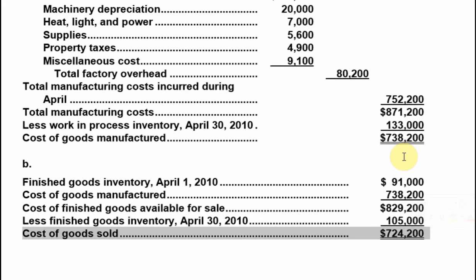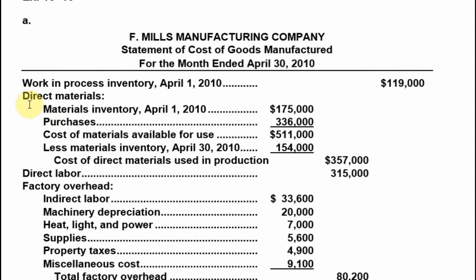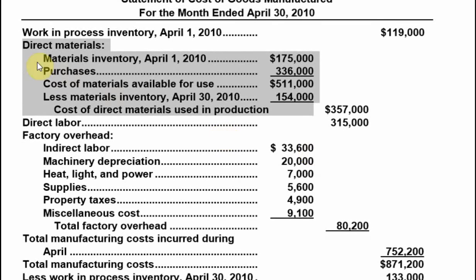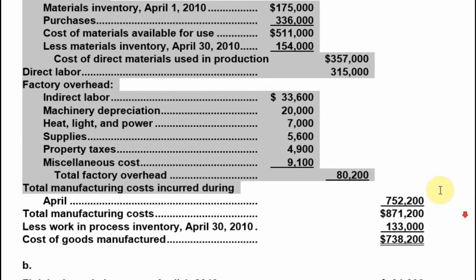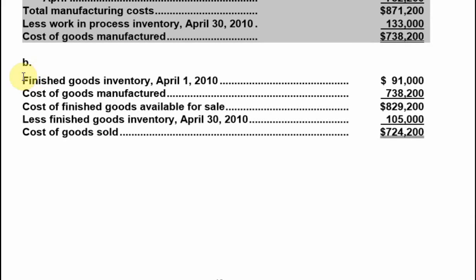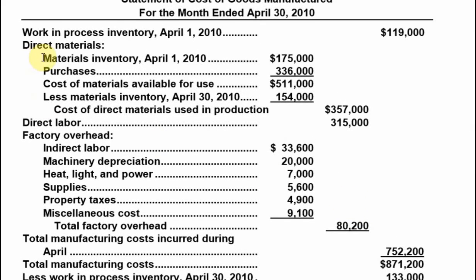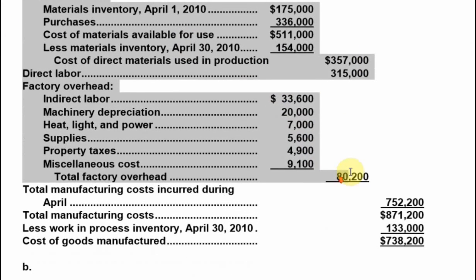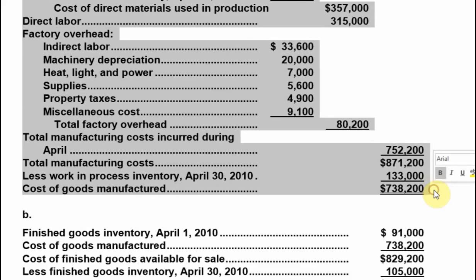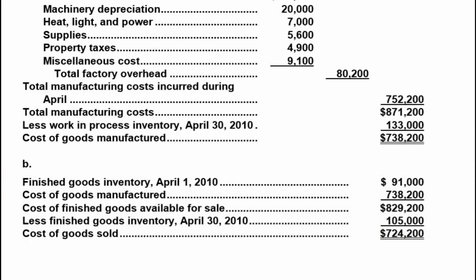This gives us cost of goods sold of seven hundred twenty four thousand two hundred. In summary, there are three tables: the first is about direct material, the second is about work in process, and the third is about finished goods. By working through all three tables, we can calculate the cost of goods sold at the end. That's the end of my video — thank you for watching.